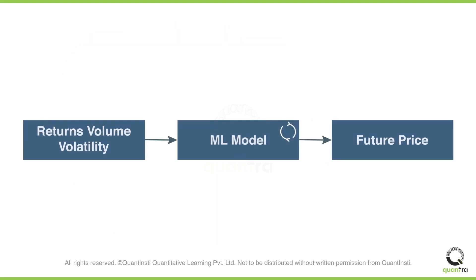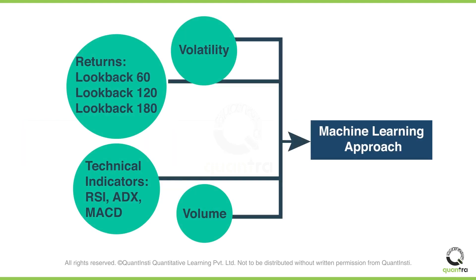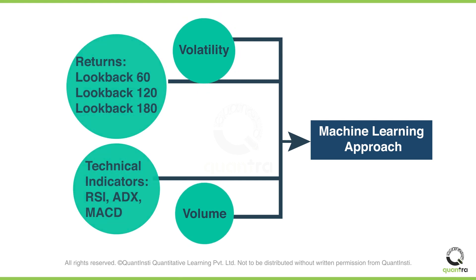But with ML, instead of relying on predefined features, the model will continuously learn from past data and identify patterns and trends that indicate momentum. For instance, after the pandemic crash, if the model should have given more importance to the volatility feature compared to the volume feature, it would have done so automatically by learning and adapting to the changing conditions.